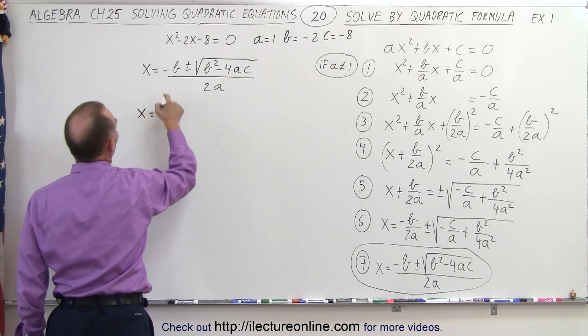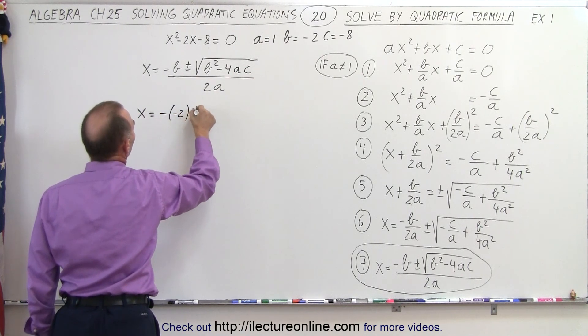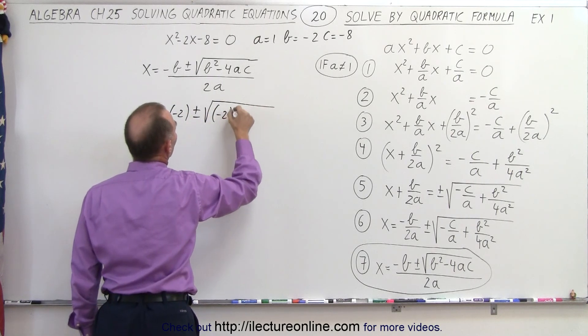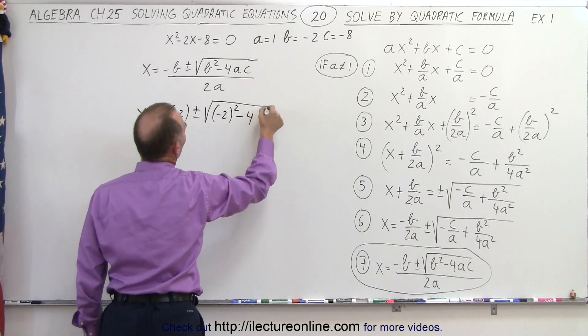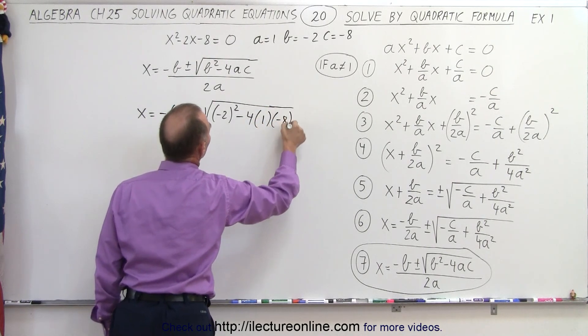X equals minus B, since B is negative 2, that's a minus times minus 2, plus and minus the square root of B squared, which is negative 2 quantity squared, minus 4 times A, which is 1, times C, which is negative 8,